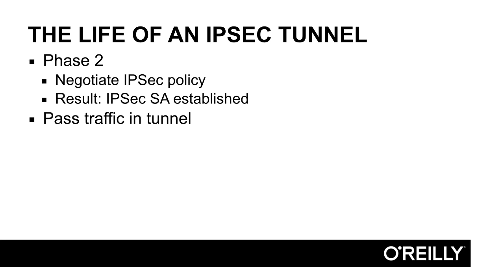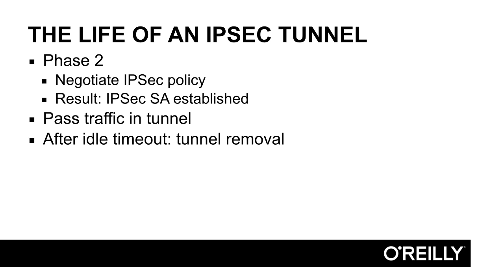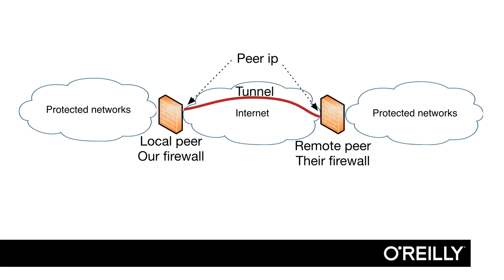After phase one and phase two are up, there will be traffic sent in the VPN tunnel. This is where our protected networks actually communicate with each other in a protected way. When the tunnel has not been used for a certain amount of time, it will be torn down — there is an idle timeout configured for the VPN tunnel, and if no traffic has been sent or received within that idle timeout, the tunnel will be removed. That's the life of an IPSec tunnel.